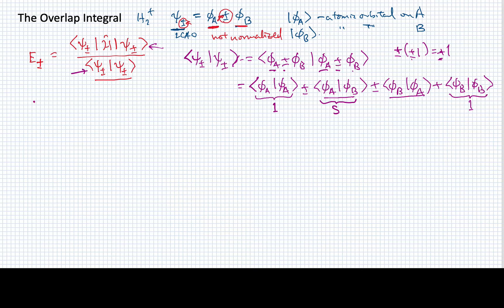So s is this overlap between these two orbitals on different atoms. They're separated by some distance r. The way we would write this out is phi a star phi b d tau. So it is just the integral of these two functions with one another. Because they're on different atoms, generally speaking, they are not orthogonal to one another.